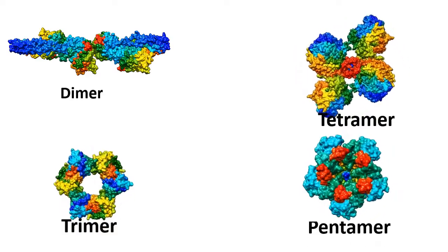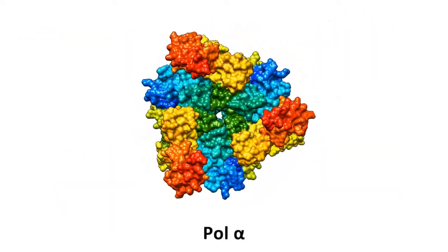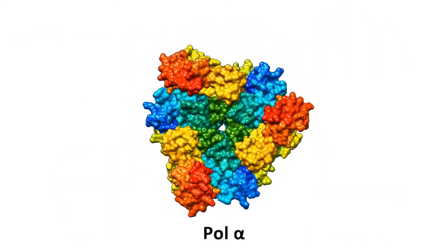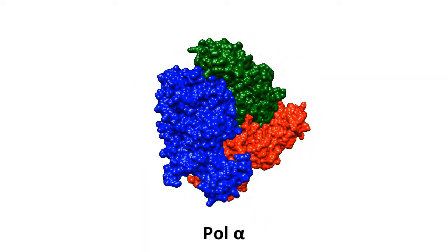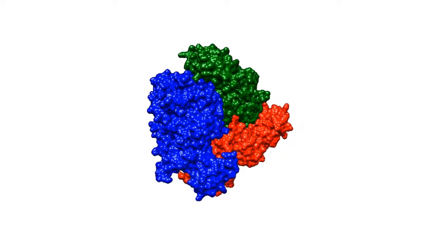An example of a protein complex is Pol alpha, which is a protein complex that helps to ensure that our DNA gets divided properly when a cell replicates. This complex is made of three copies of the same protein, that is, it's a trimer. One copy of the protein alone can't bind to the DNA to divide it.